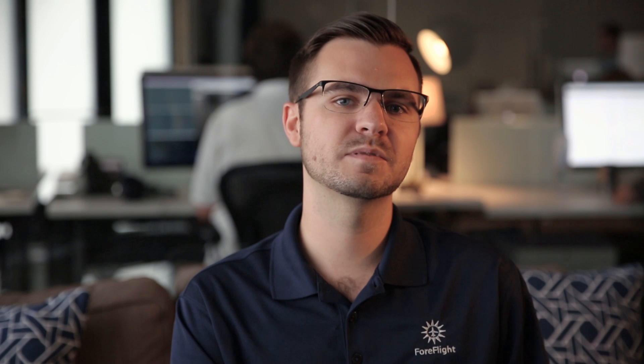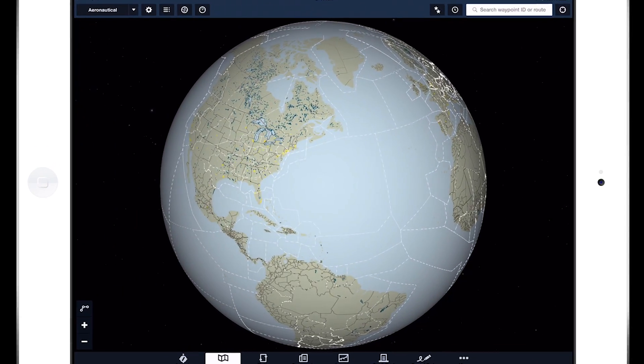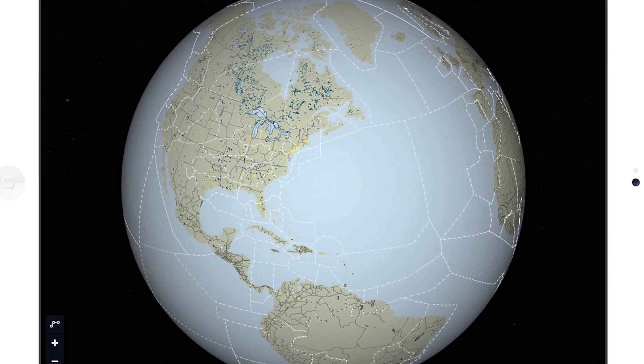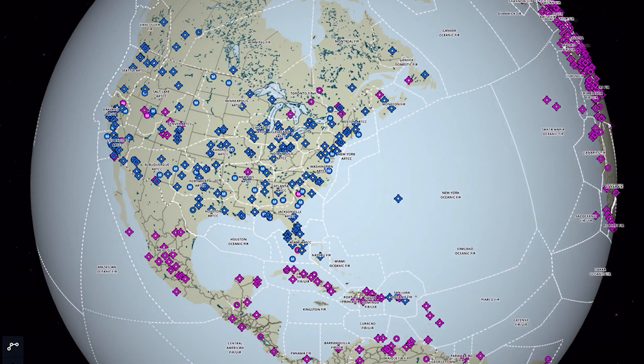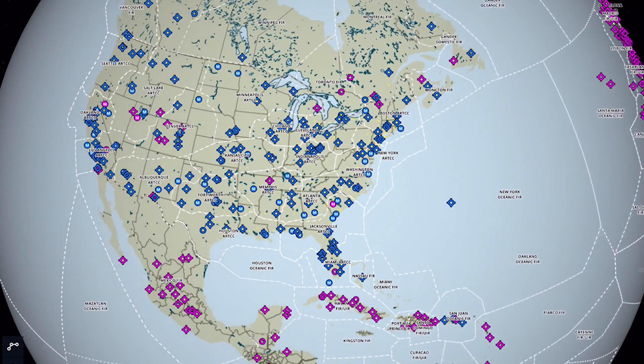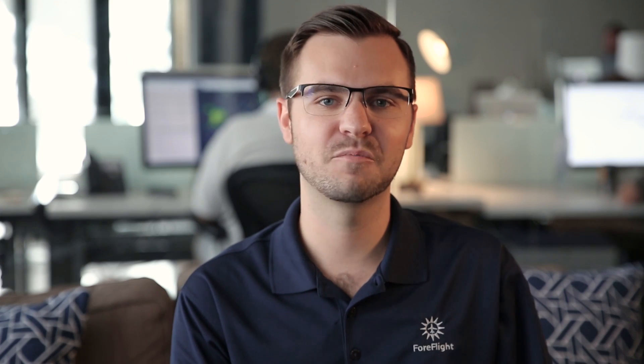ForeFlight Global Aeronautical Maps are built on the new ForeFlight map engine, which is something we wrote from scratch in-house and now powers all of the mapping in ForeFlight Mobile. I'm Ryan McBride, Product Manager for Personal Aviation at ForeFlight.